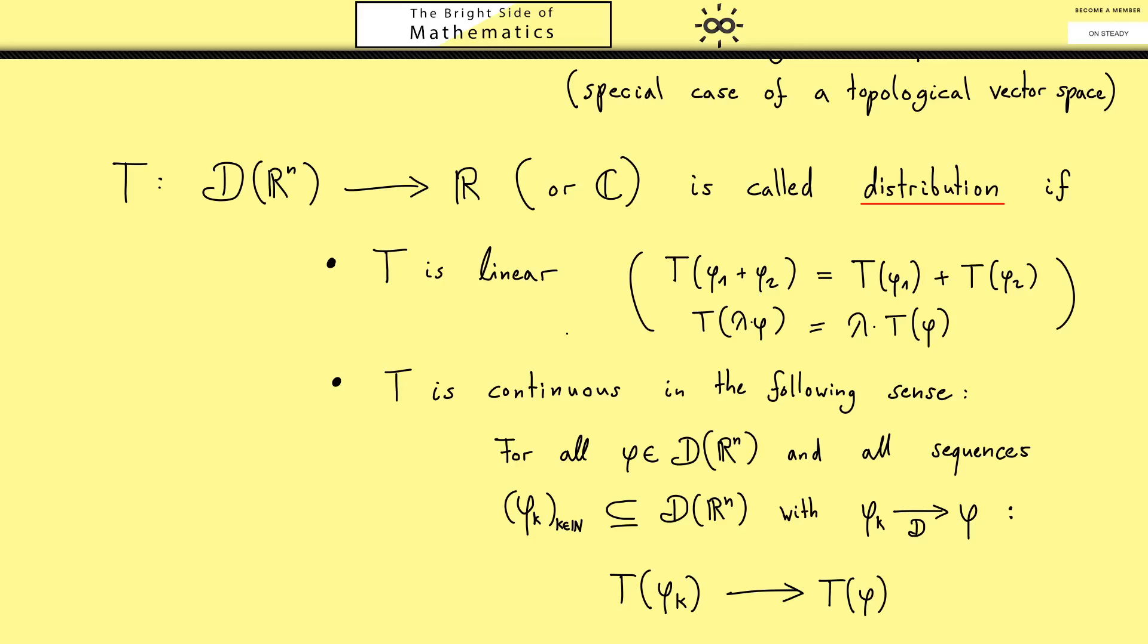Also here you should ask yourself what is the notion of convergence in this case. But you already know. These are just numbers, and therefore this is a normal sequence of numbers. I already told you this is what one calls sequentially continuous. However, we will always shorten that and just say distributions are continuous, but we will always mean this one here.